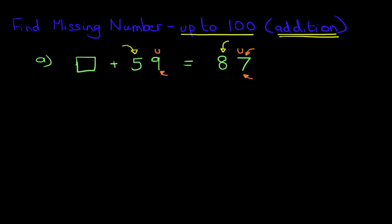The answer is 8. 9 plus 8 equals 17. And because it's 17, there's a 10 there. We carry that across to the tens column. Okay, that's the units done.